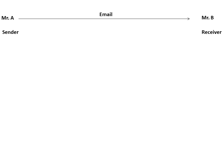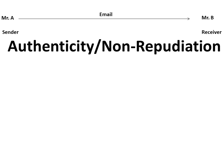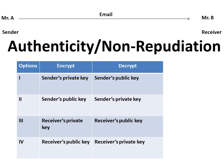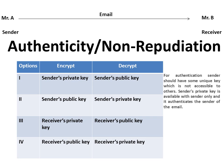Let us take one more example. Mr. A wants to send an email to Mr. B, but here he is not concerned about confidentiality. What he wants is authenticity and non-repudiation. For authenticity, the sender should have something unique that is not available to anyone else — a unique key which is not accessible to others. The sender's private key is the only thing available with the sender only, and it authenticates the sender of the email. In such a scenario, the answer should be sender's private key for encryption. This will ensure authenticity and non-repudiation of the email.